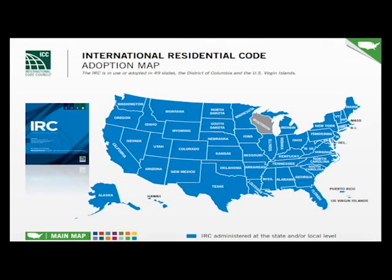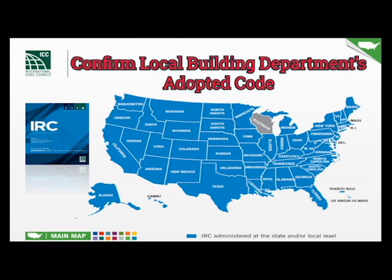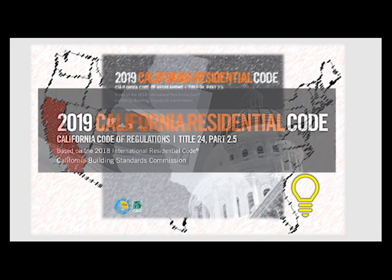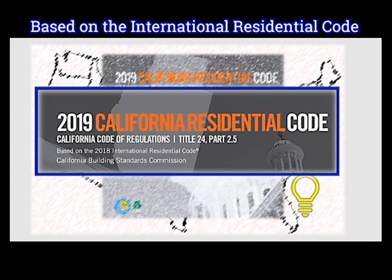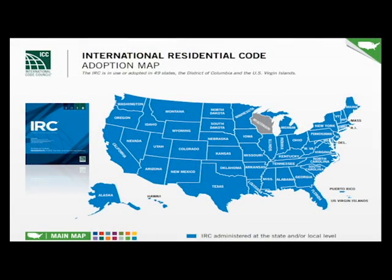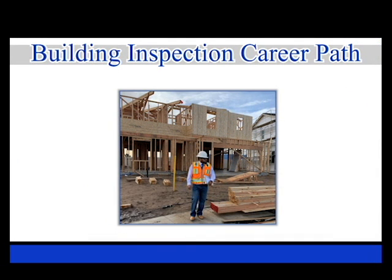The International Residential Code is adopted in 49 of the 50 states. Wisconsin is the only state that has not adopted the International Residential Code. However, it is still important to check with your local building department regarding the code adopted at the local level. An example is the state of California — the California Residential Code is based on the International Residential Code and is the enforceable document, not the IRC itself. You can access an interactive map which shows the codes adopted by states, and view the Building Inspection Career Path video for additional resources.